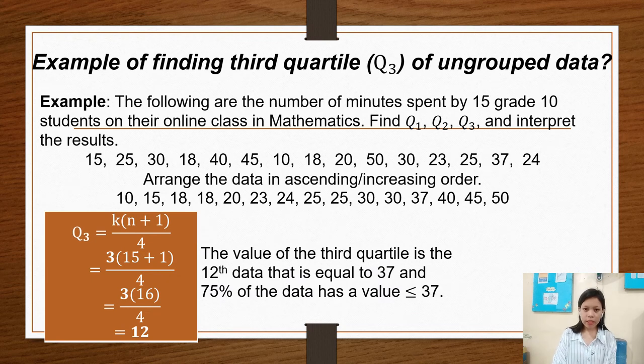So we have here the third quartile of ungrouped data. Arrange the data in ascending or increasing order. We have here the value for k, which is 3, because we have to find the quartile 3. K times n plus 1 over 4 is the formula. So 15 plus 1 is 16. 16 times 3 over 4 equals 12.